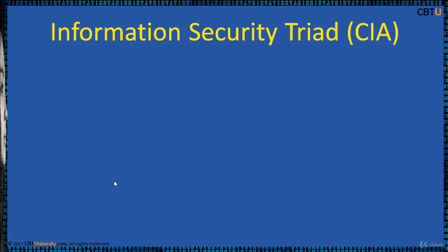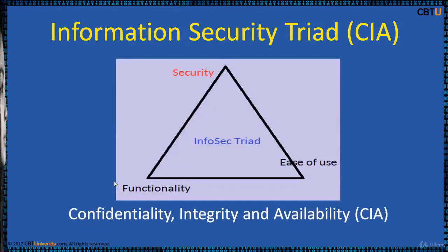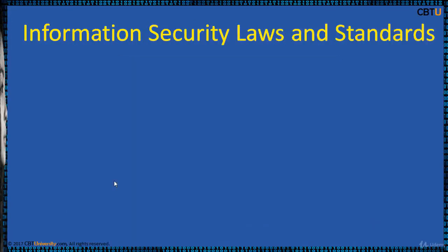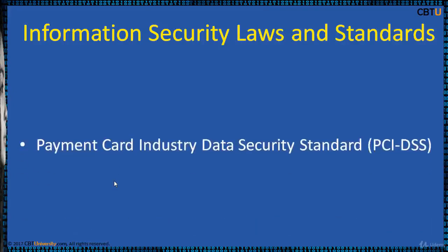Information Security attributes or qualities are Confidentiality, Integrity, and Availability. These translate to Security, Functionality, and Ease of Use. A balance of these parameters is required for effective Information Security.